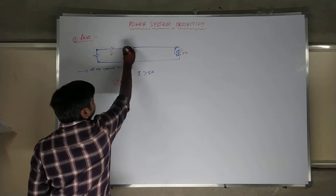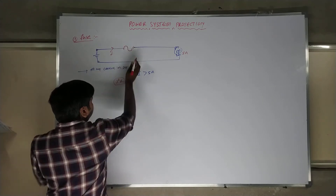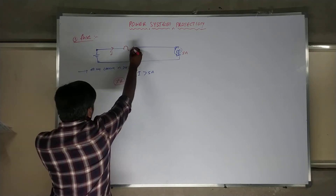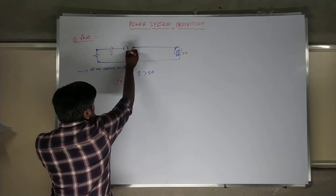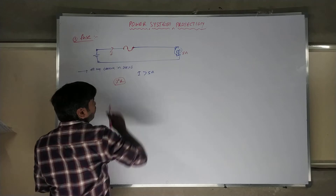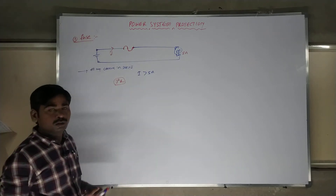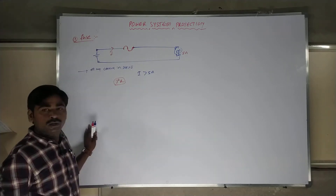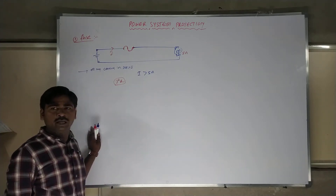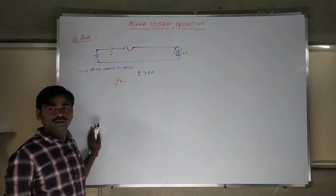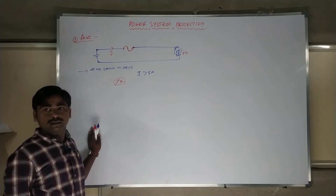The symbol of the fuse looks like this — in some cases a sinusoidal supply representation is used. There are a number of types of fuses that we will discuss later.